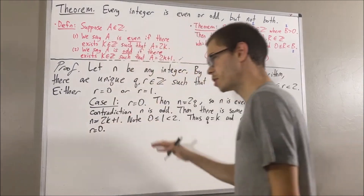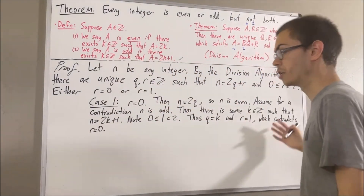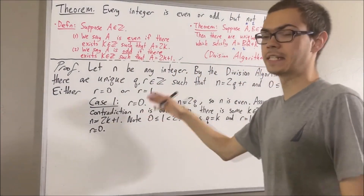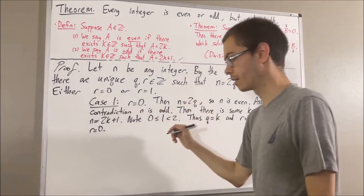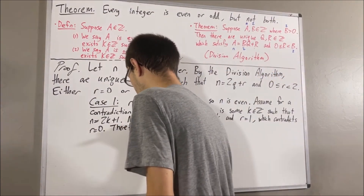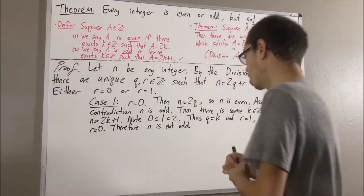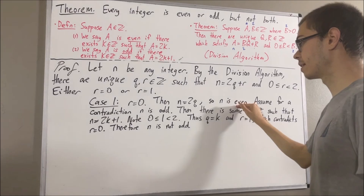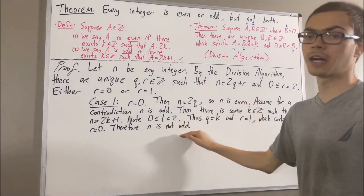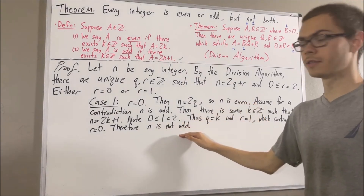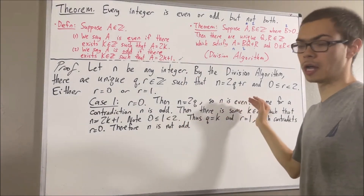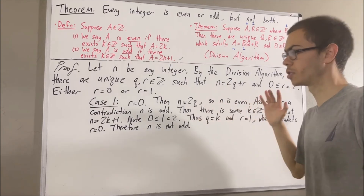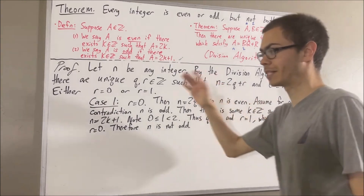Our assumption that n is odd led us to a contradiction, so we must instead have that n is not odd. Because we've shown n is even but not odd, this means we have shown that n is even or odd, but not both. So this completes case 1.